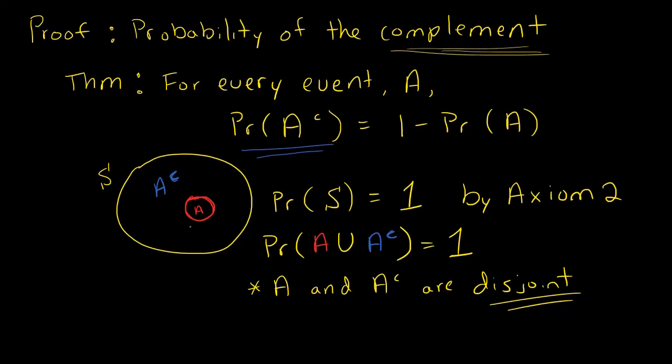So because A and A complement are disjoint, we know that the probability of A union A complement is going to equal the probability of A plus the probability of A complement. Directly, this follows directly from the fact that they are disjoint events. And we know that this equals 1 from up here. This equals 1.